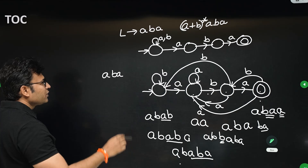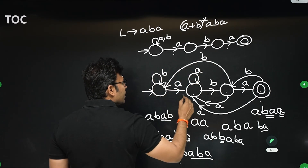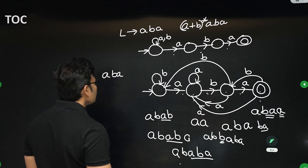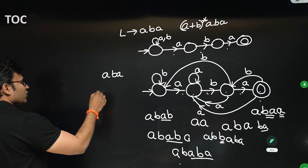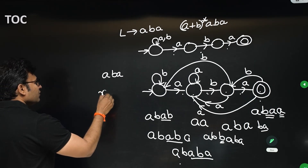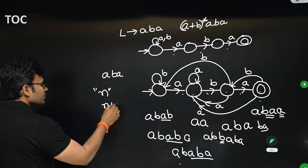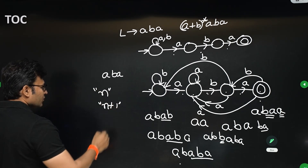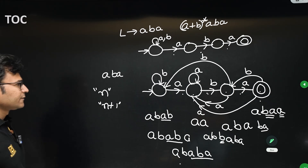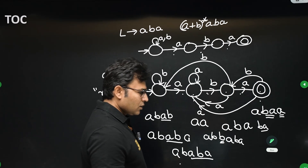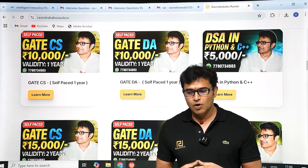So the question is about ending with 'aba' — you put 'a', 'b', 'a' on the edges, getting four states. In general, if a string ends with a suffix of length n, you get n+1 states. That is how you answer 'ending with' questions.